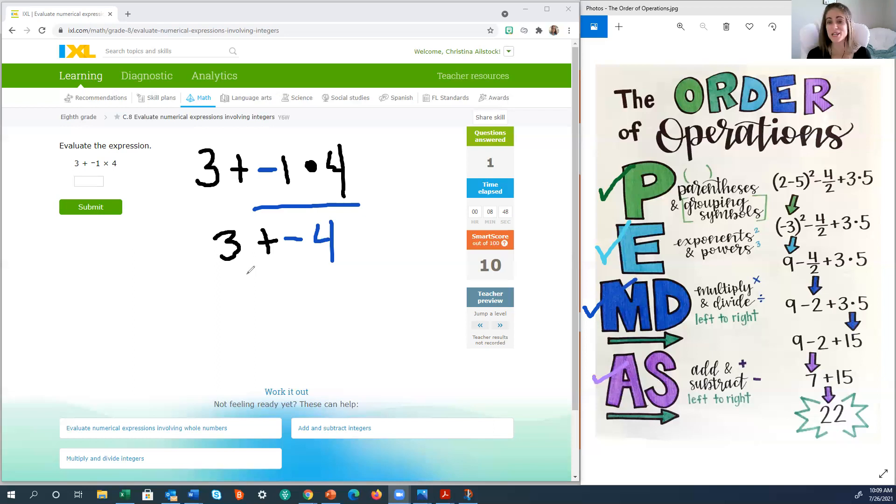So we have 3 plus a negative 4. Alright, we're going to take another pause so we can review the addition and subtraction rules. The rules for multiplying integers is separate from the rules for adding and subtracting integers.